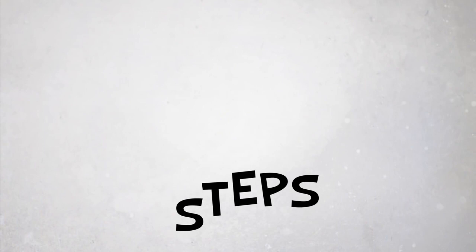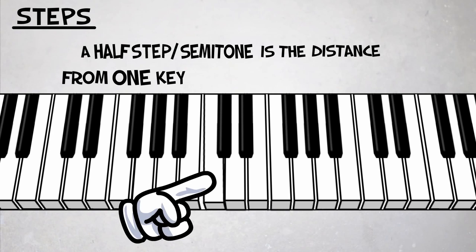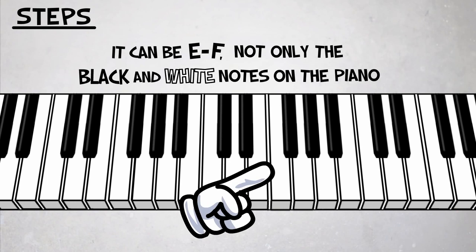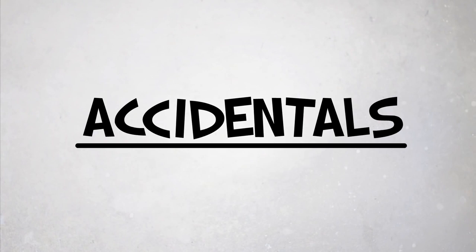Steps: A half step is the distance from one key to the next nearest key. It can be E to F. It is not always black and white notes on the piano. A whole step is two half steps, for example C to D.